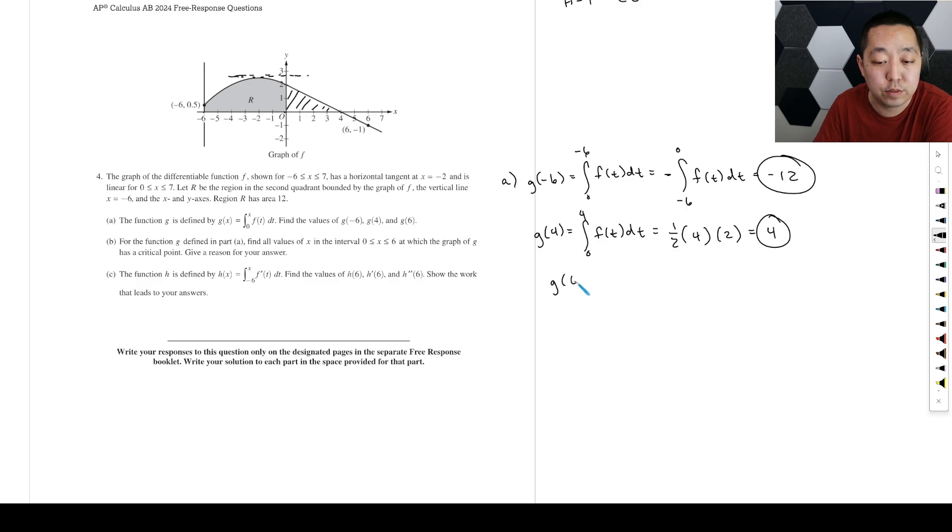And then they asked for G of six. Wow, they asked for three of these. So you're going to take this area that's, we're already going left to right. So you're taking the area here that's four. And then you're going to take away this area here. This is negative area. So it's one half. The base is two. And the height is negative one. So that's negative one. So this is going to be four minus one, which is three.